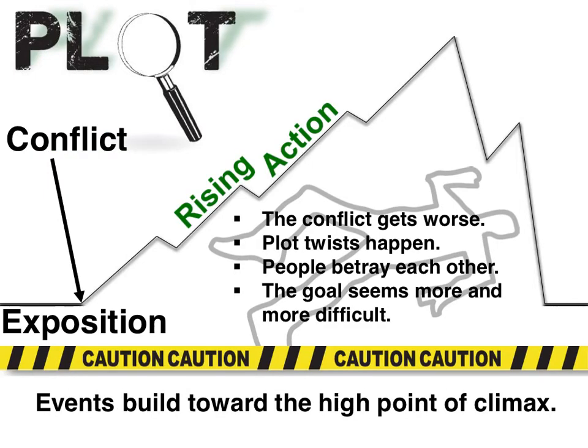Next, we have the rising action. These are all the events that are going to build up to the high point of the climax — all the events that are going to lead up to that main part of our story. Our conflict or problem is going to get worse. This is where all the plot twists happen. Maybe you thought a character was good and all of a sudden they're a spy or become a suspect. We're going to see other characters get in the way, and the solution to the problem seems more and more unlikely.